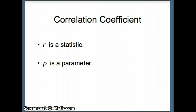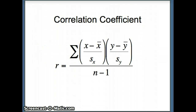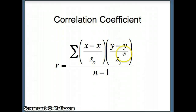r is a statistic and rho is a parameter. When looking at samples, the correlation is r. If we somehow had the entire population — which practically is impossible — then rho would be the correlation coefficient. To compute r, the formula is: r equals the sum of (x minus x-bar over s-sub-x) times (y minus y-bar over s-sub-y), divided by n minus one — that is, the sum of the product of the z-scores, divided by n minus one.